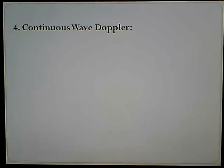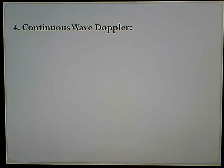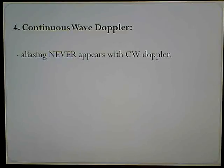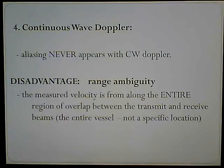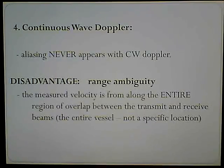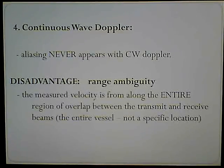Number four: continuous wave Doppler. Aliasing never appears with continuous wave Doppler. The disadvantage is range ambiguity — the measured velocity comes from along the entire region of overlap between the transmit and receive beams, the entire vessel, not a specific location like we can achieve with pulsed wave Doppler. So you give up a little bit of that specificity.